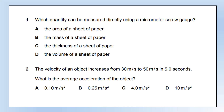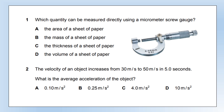Which quantity can be measured directly using a micrometer screw gauge? There are a few things to pick up here. First of all, what is a micrometer screw gauge? It's a tool you should have used as part of your lessons preparing for GCSE — one of the tools you have to know how to use. The other key point is that it says 'measure directly', meaning you're not going to be doing any subsequent calculations.